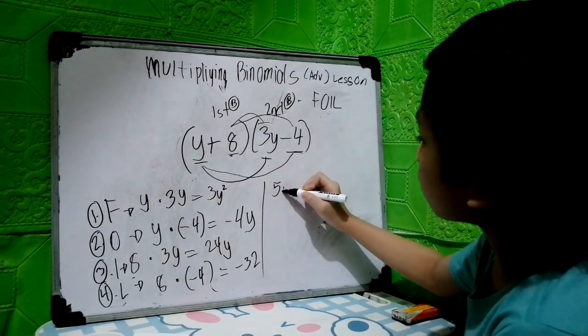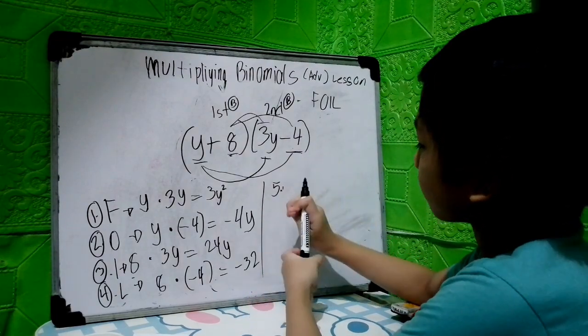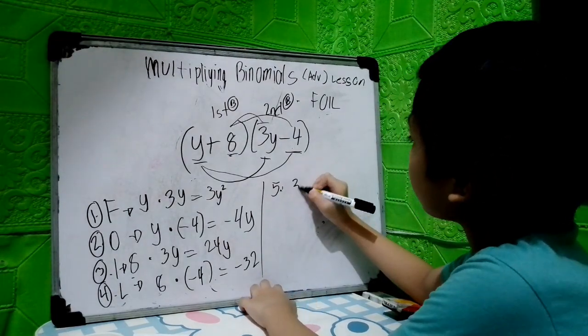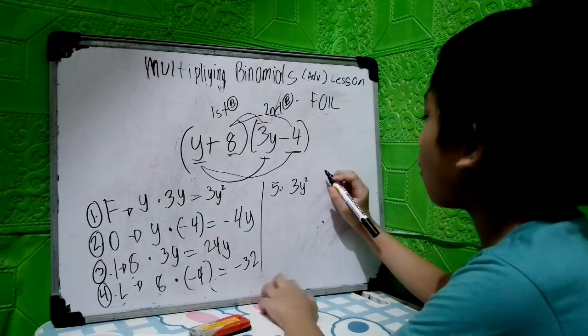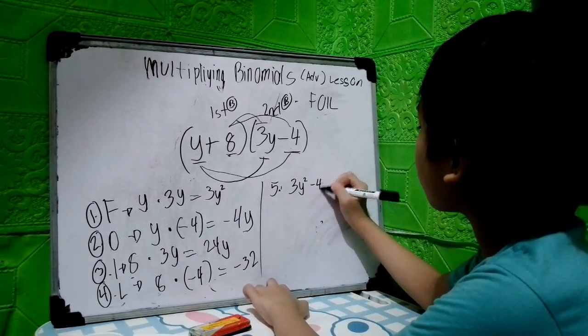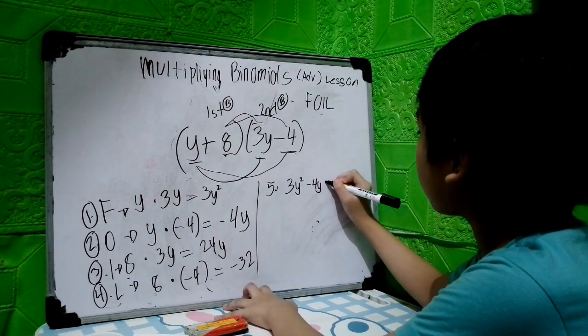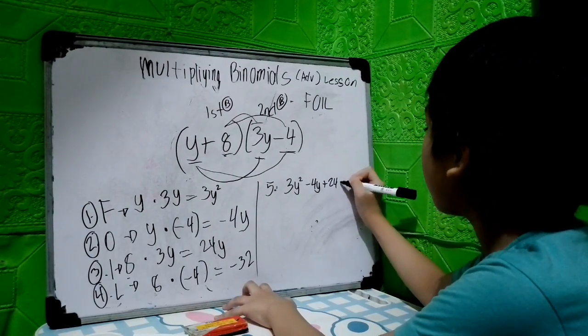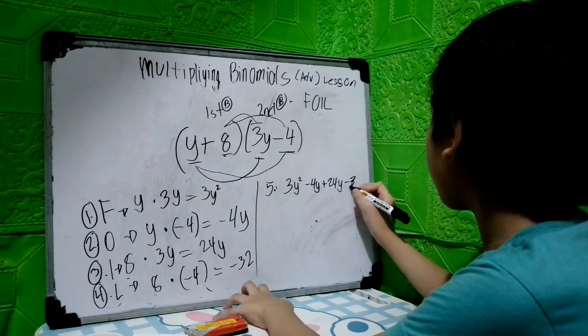The fifth step is to combine. In F, we got 3y squared. For O, we got negative 4y. For I, we got positive 24y. And then negative 32.